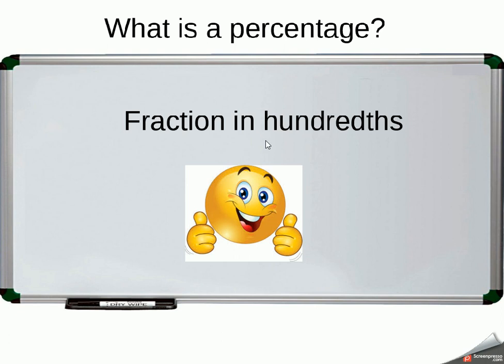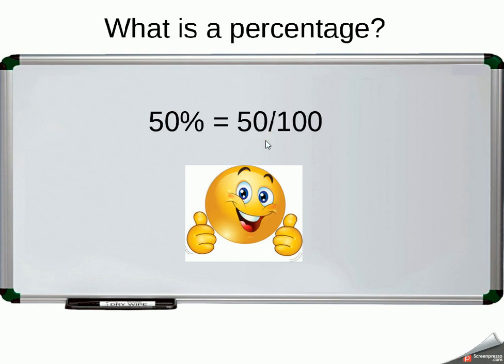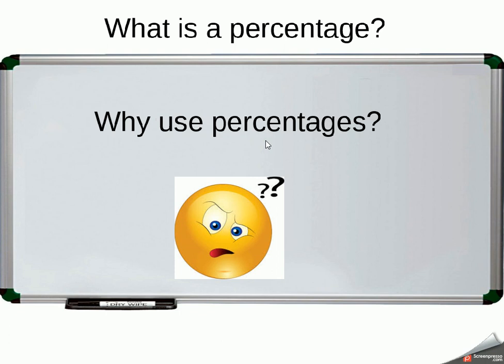And one of those parts would be a hundredth. So in other words, with that 50%, if I split something into a hundred equal parts and took 50 of those parts, I would have 50%. So 50% is the same as 50 hundredths, 50 over 100.